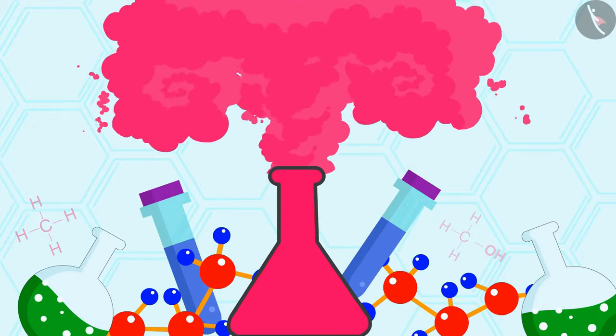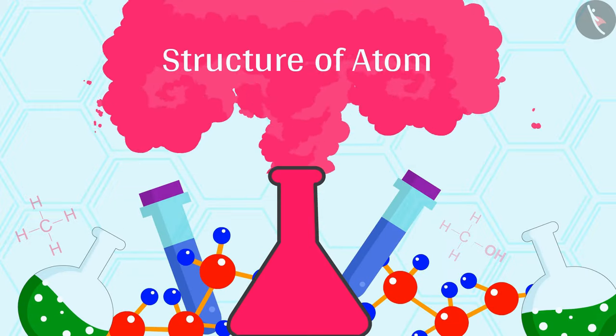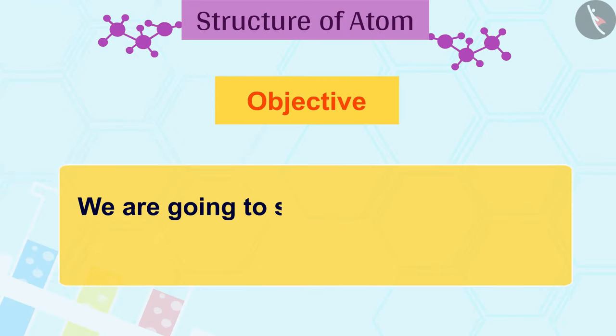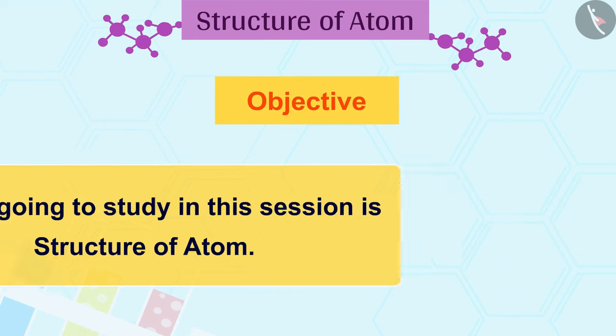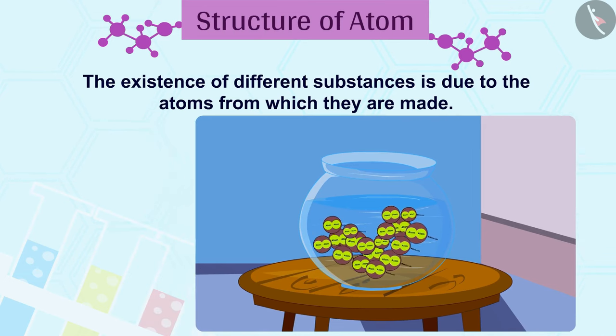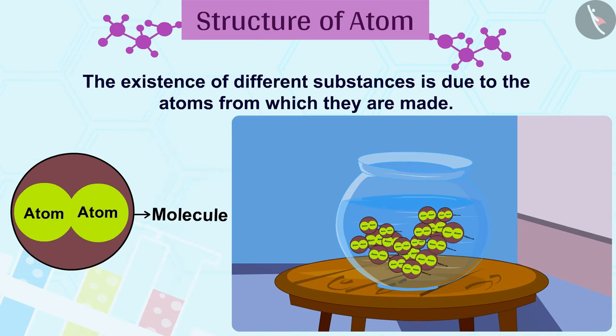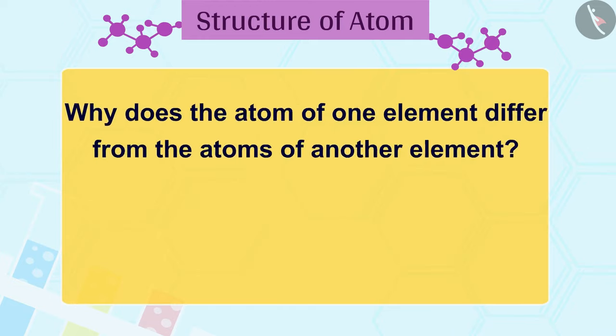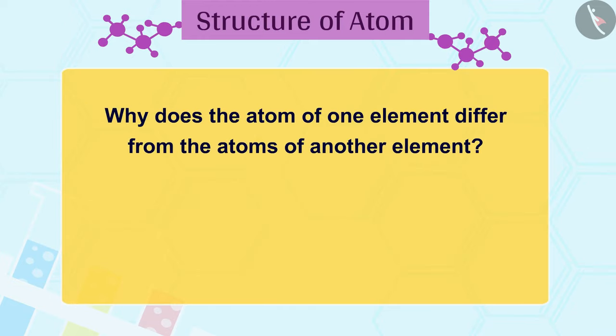Hello friends, welcome to this video session. The topic we are going to study in this session is structure of atom. We have seen that the existence of different substances is due to the atoms from which they are made. But why does the atom of one element differ from the atoms of another element, and are atoms really undivided? We will find the answers to these questions in some upcoming videos.